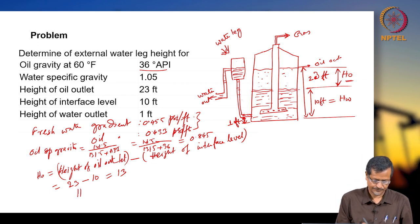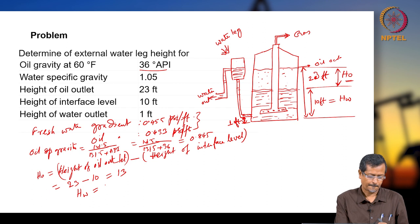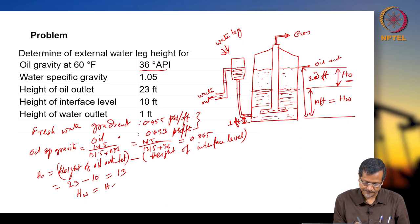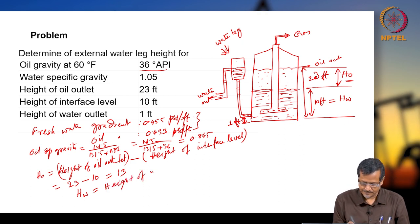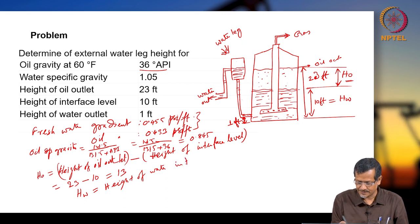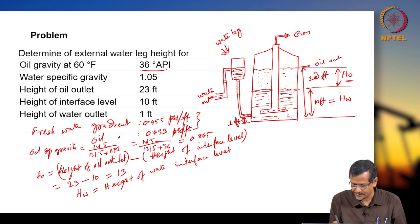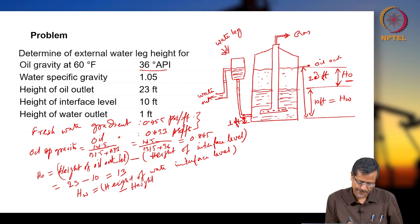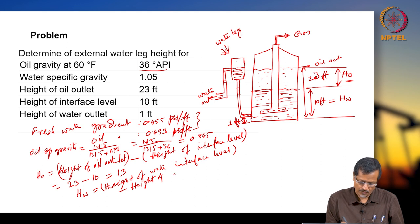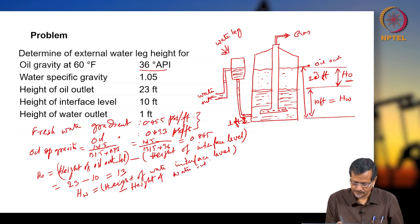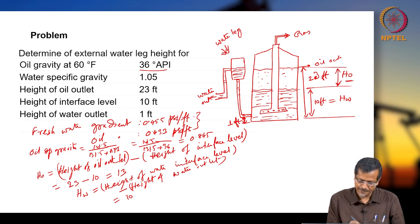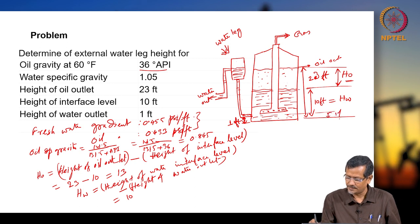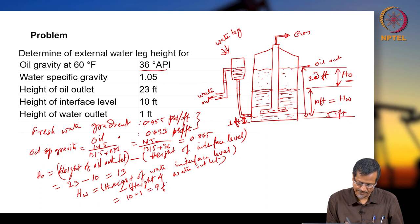Now calculate HW: height of water interface level minus height of water outlet = 10 minus 1 = 9 feet. So the actual height of water HW = 9 feet.